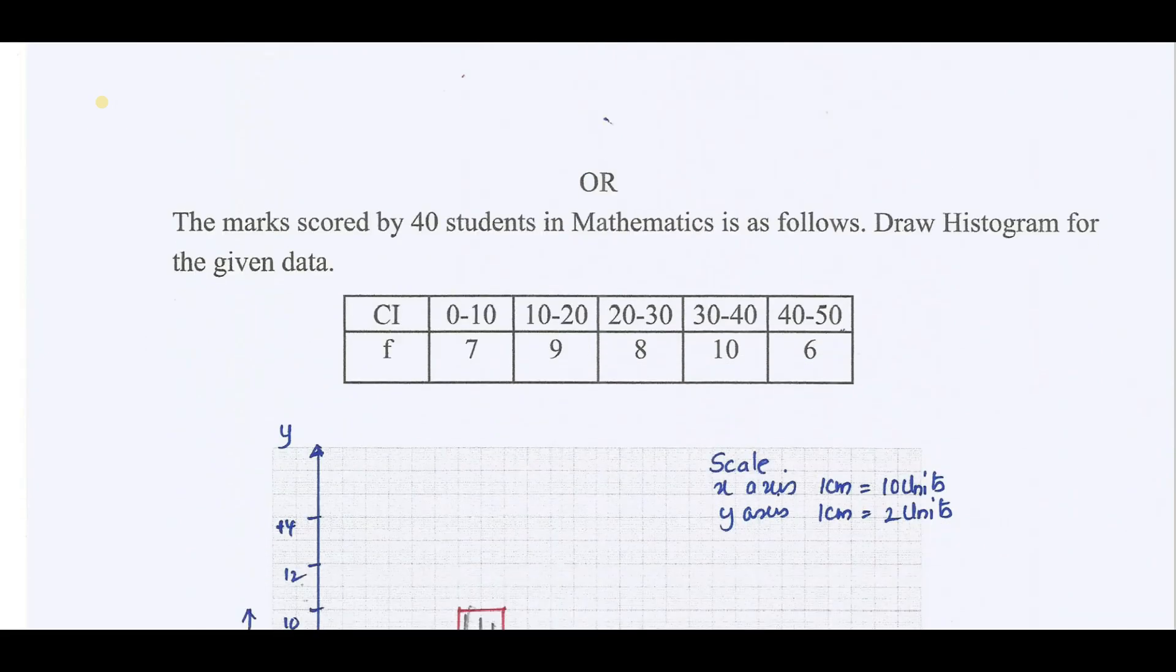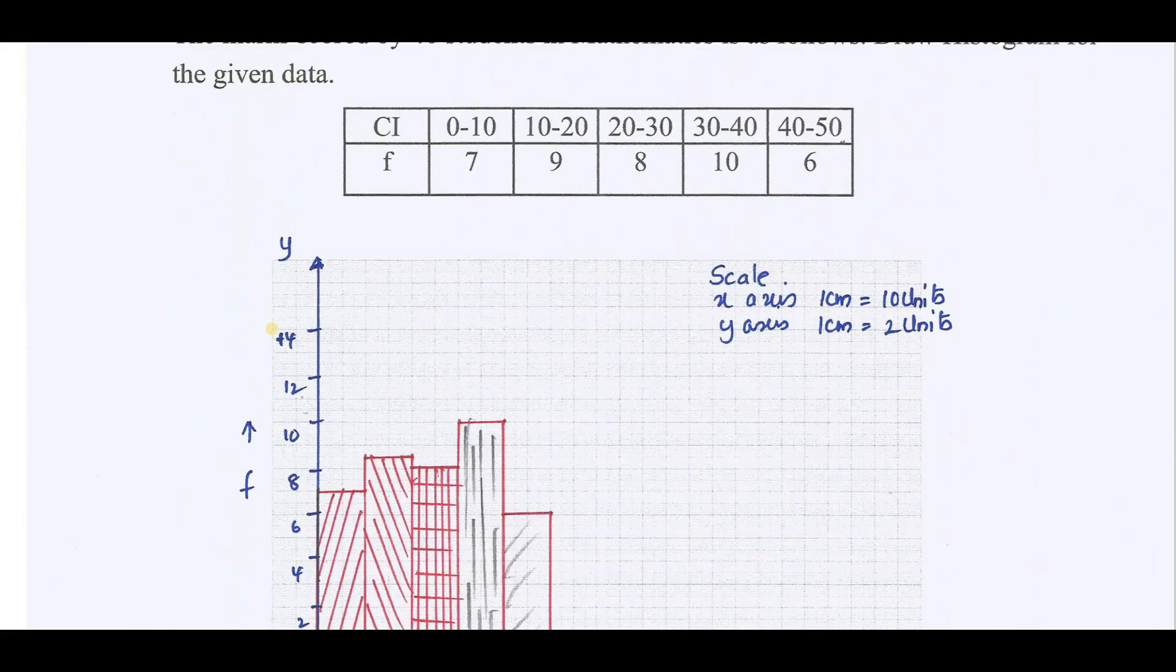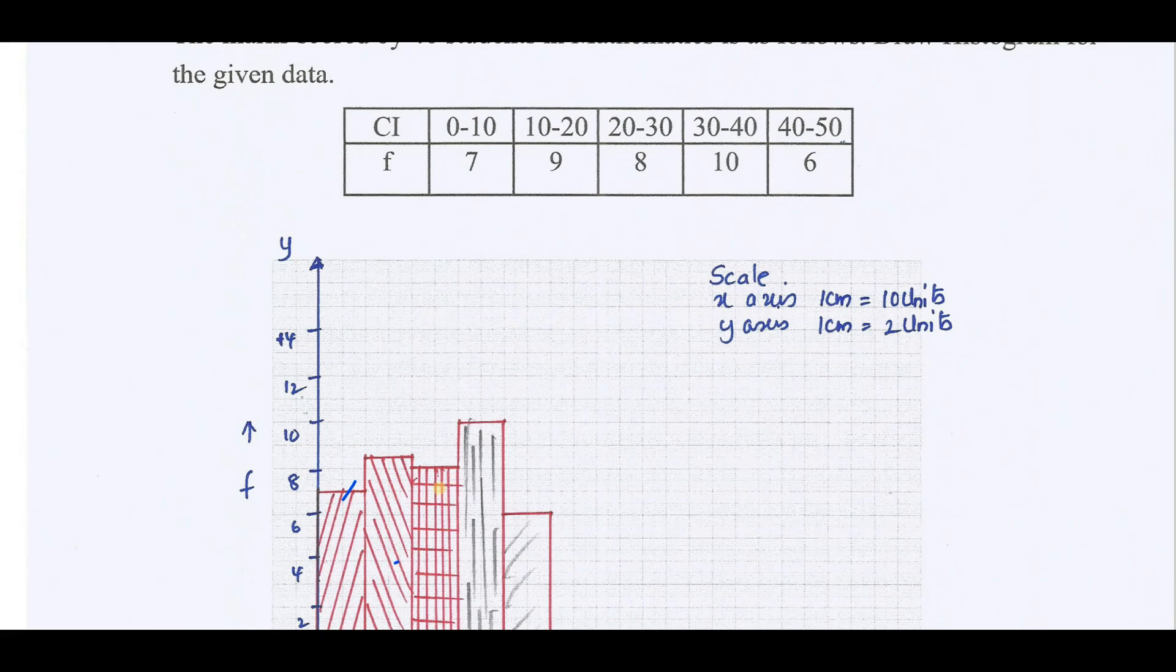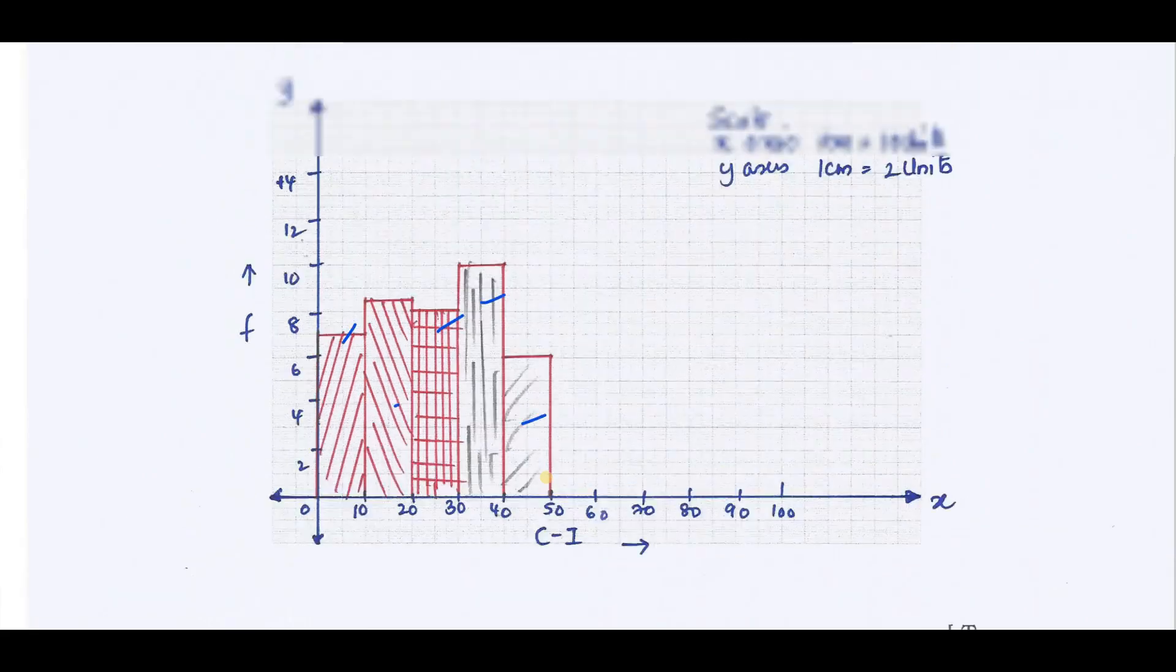The total marks scored by 40 students in mathematics is as follows. Draw histogram for given data. 0 to 10 is 7, 10 to 20 is 9, 20 to 30 is 8, 30 to 40 is 10, 40 to 50 is 6.